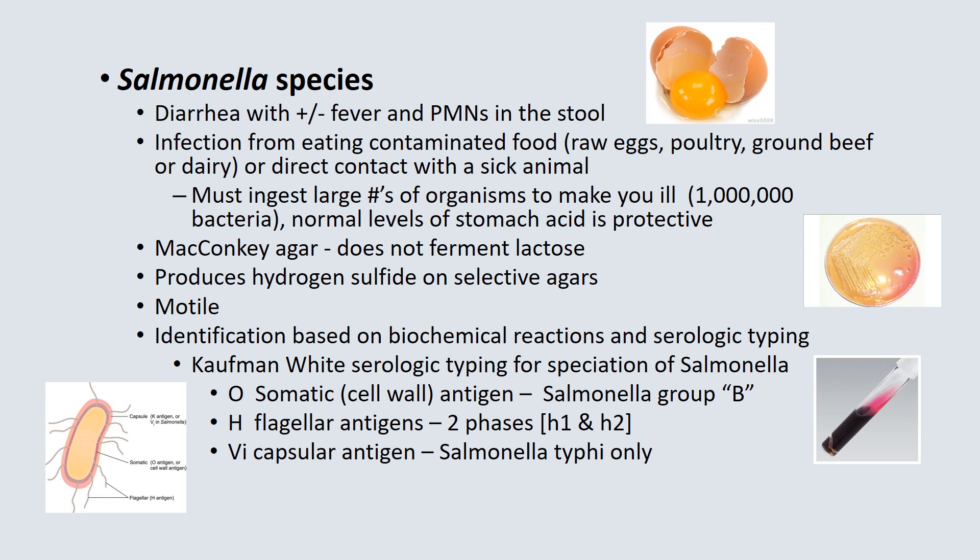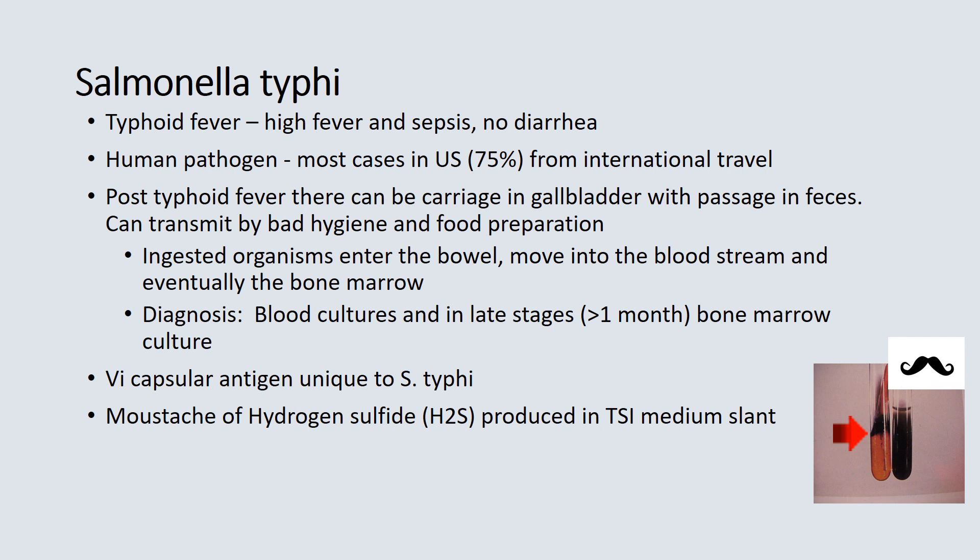On MacConkey agar, Salmonella does not ferment lactose and produces hydrogen sulfide on selective agars. It is motile with many flagella, which can be used for identification based on a biochemical and serologic typing scheme known as Kauffman-White typing. There are over 250 species of Salmonella, so biochemicals alone cannot speciate the organism, requiring the Kauffman-White serologic typing, which makes use of the somatic cell wall antigen, flagellar antigens, and the Vi capsular antigen.